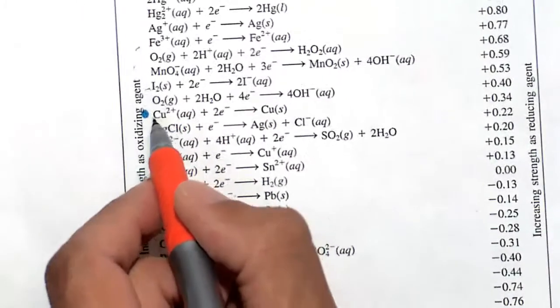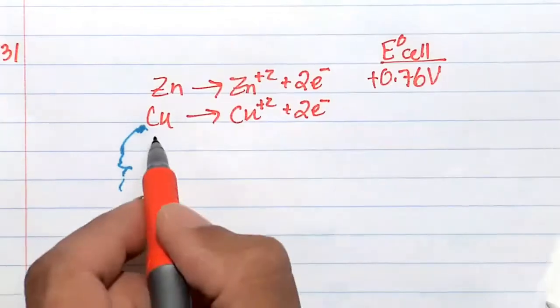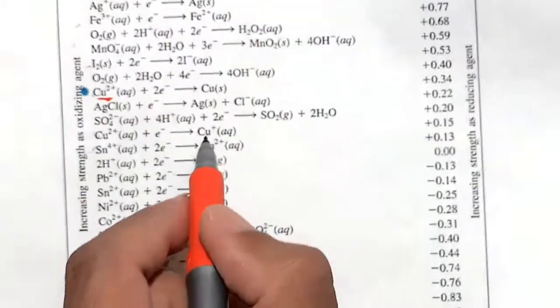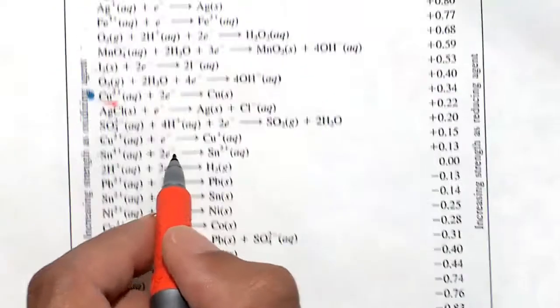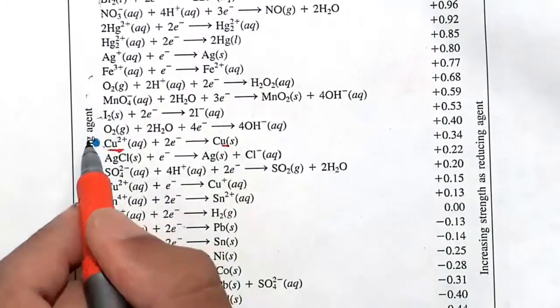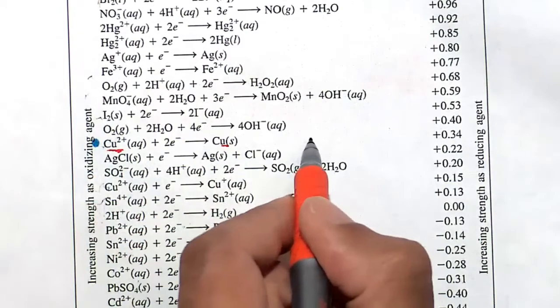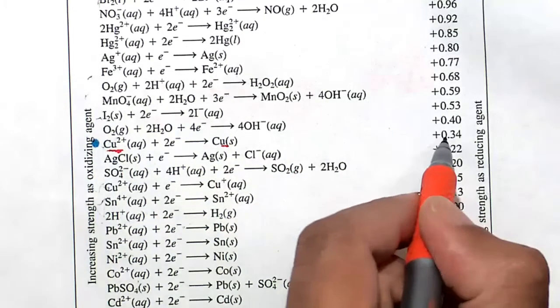Let's find the reduction potential here. It's copper plus two. Here's copper going to copper plus two. We've got to flip this. It's minus 0.34 volts.